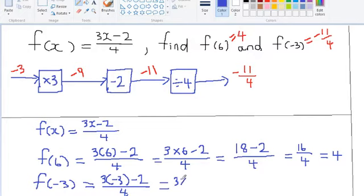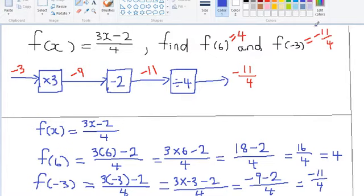3 times negative 3, then subtract 2, all over 4. 3 threes are 9, and a positive times a negative gives a negative, so we have negative 9, take away 2, all over 4, which gives negative 11 over 4. We got this same answer up here when we used the number machine. This is part 2 of evaluating functions, and I hope that you understood it.